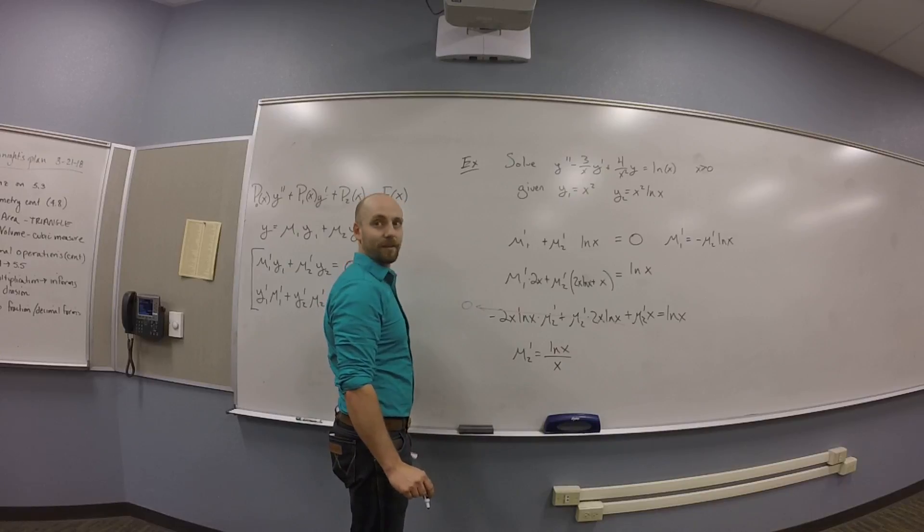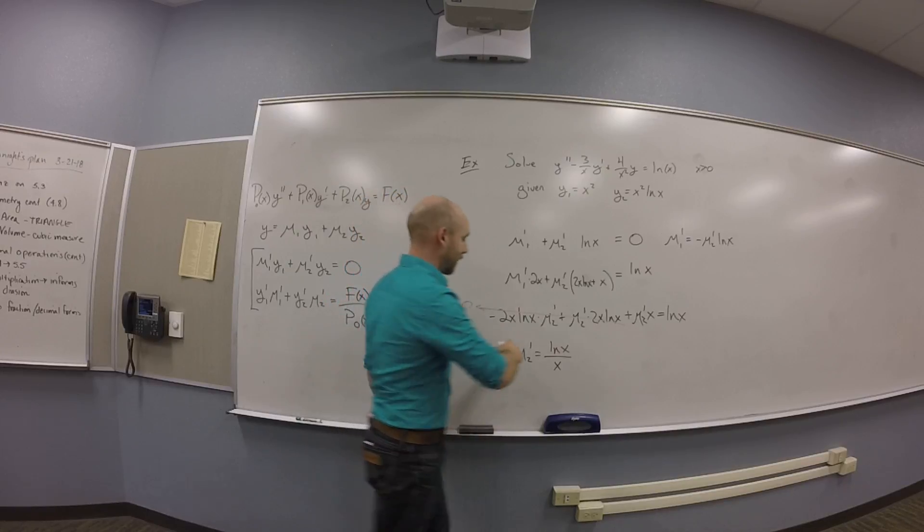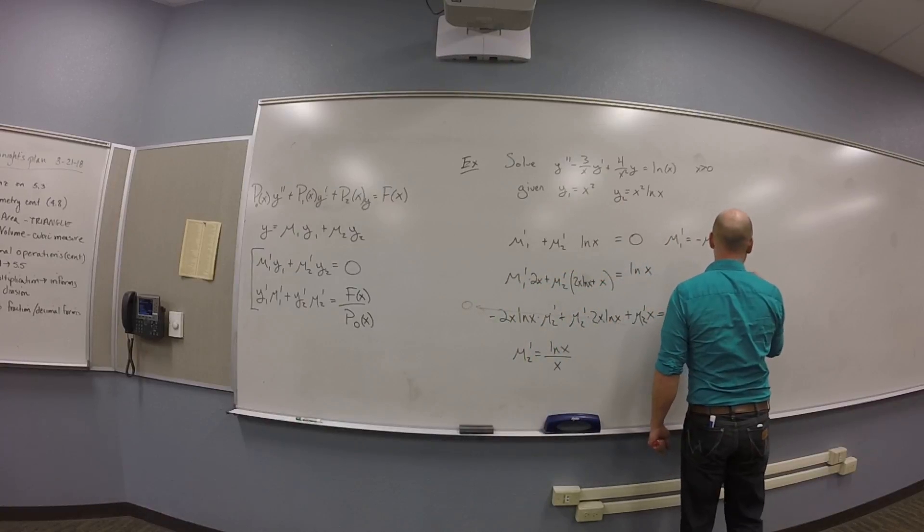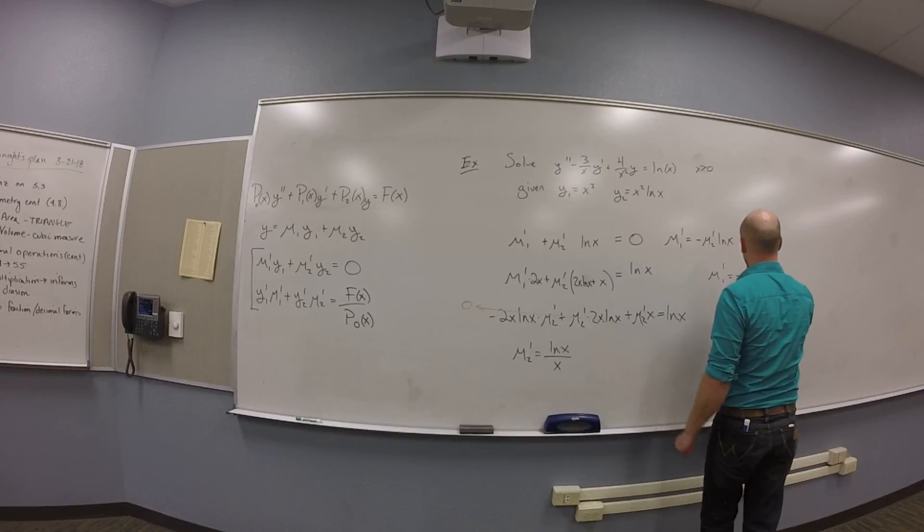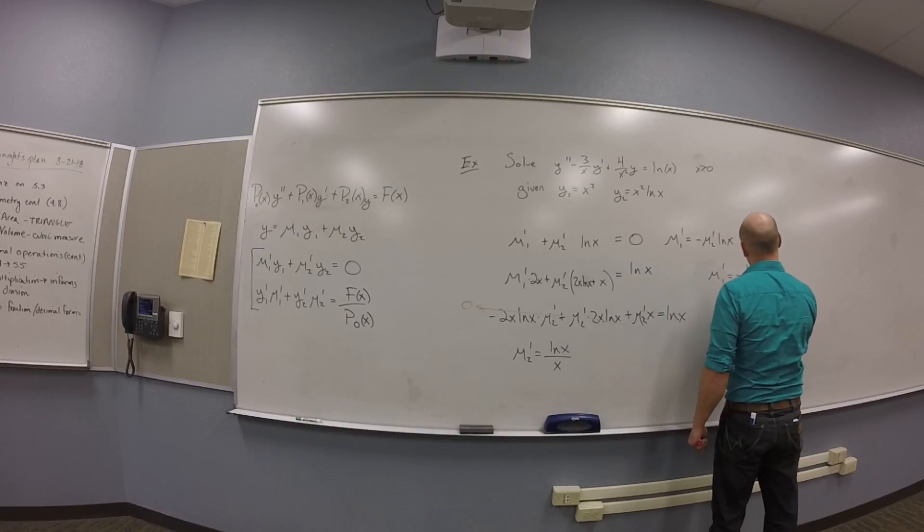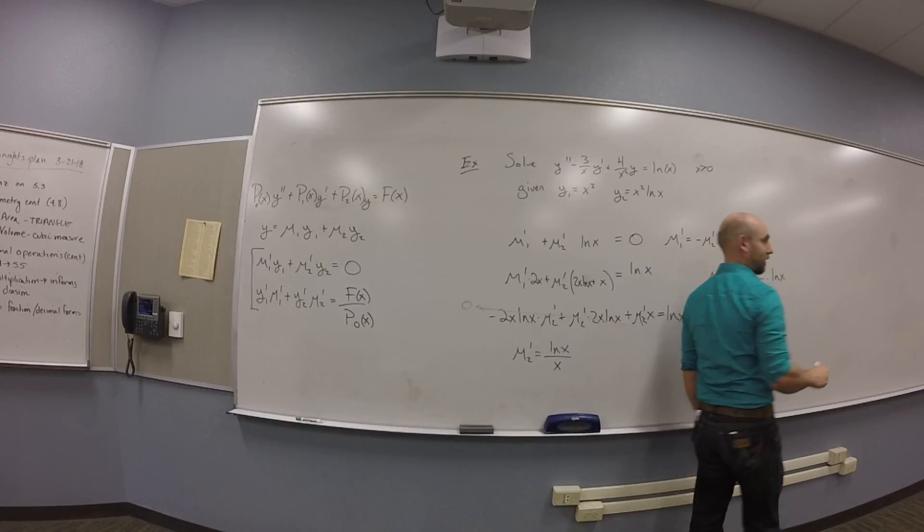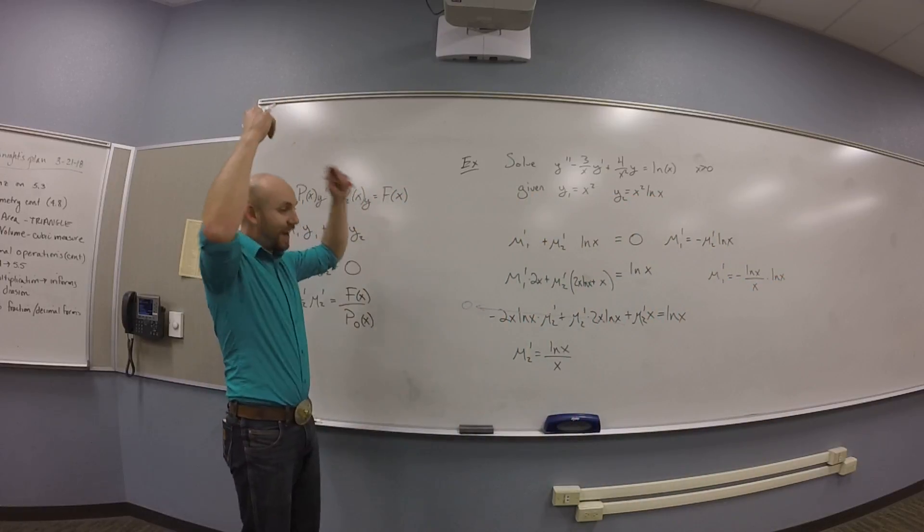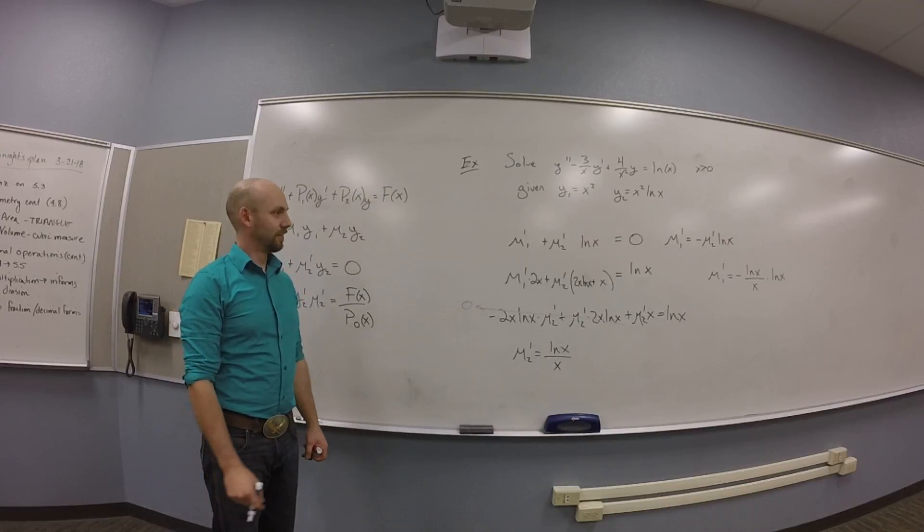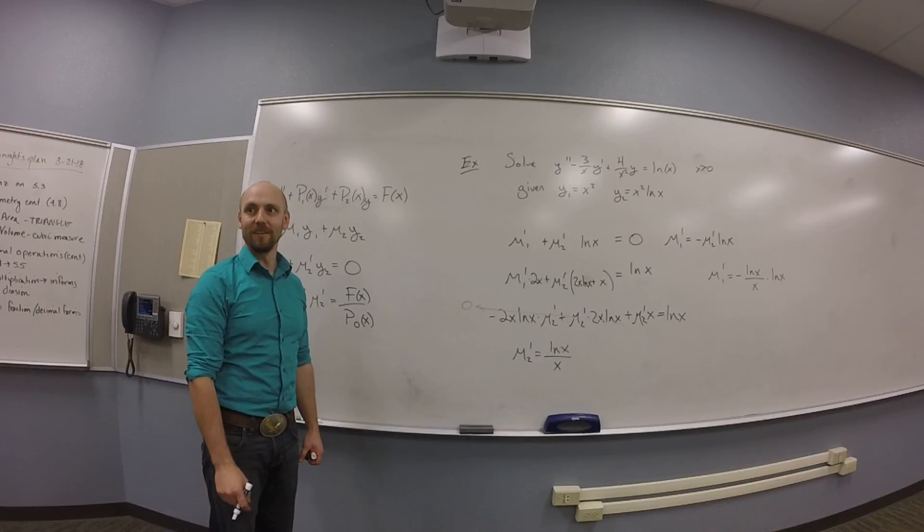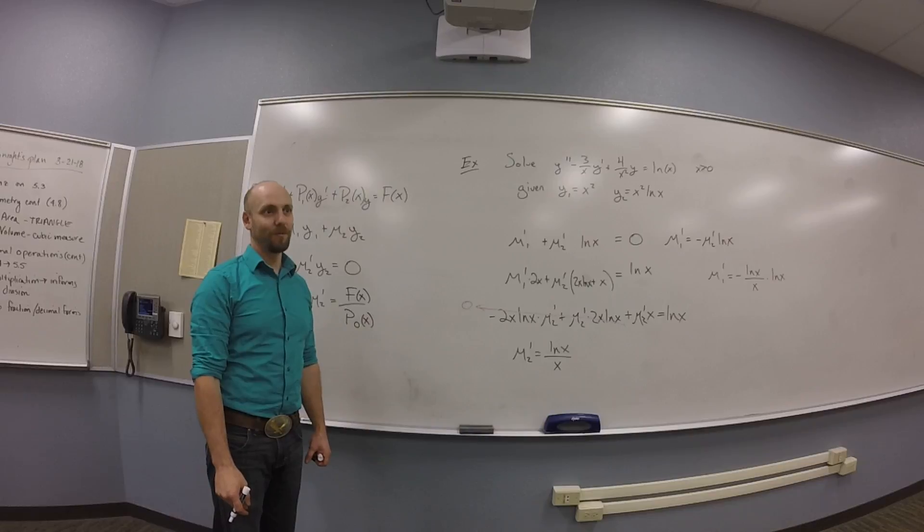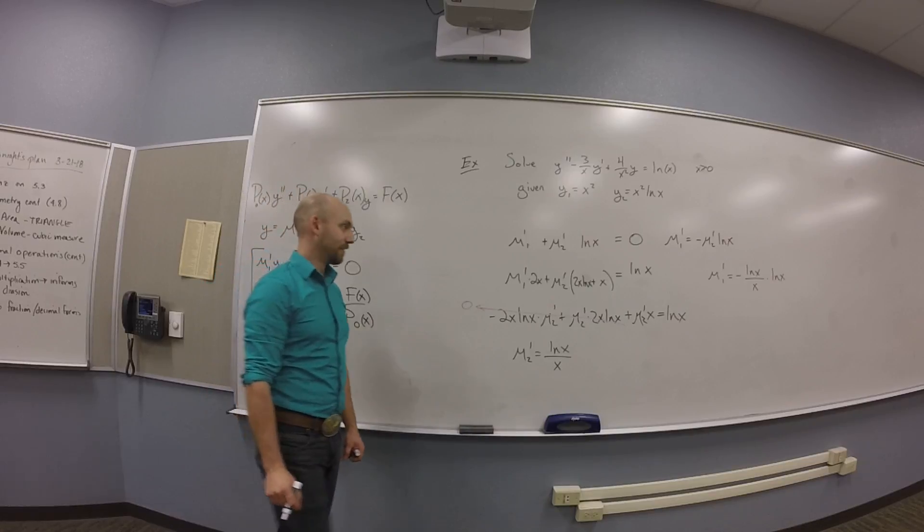Plug that back in up there. Okay. And then if you plug that back in up here, you get mu1 prime is minus log of X squared over X. So, X times log of X. Cool. Right? Double integral maybe? I don't know. Oh, for crap. Integral. Yeah, you're right. I don't know the mu's. I just know mu primes, right? Oh, but that's not so bad. I can find mu's from mu primes. I just have to integrate.